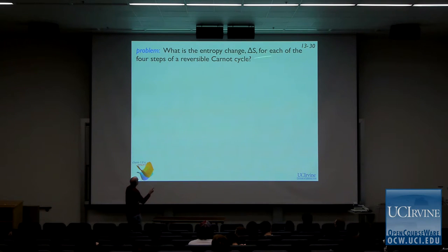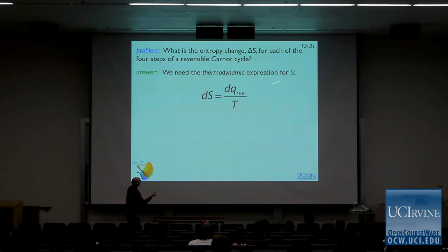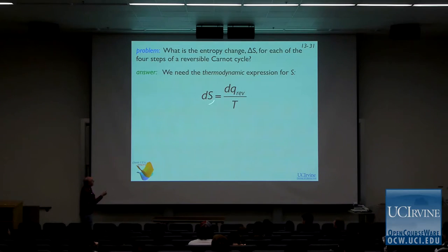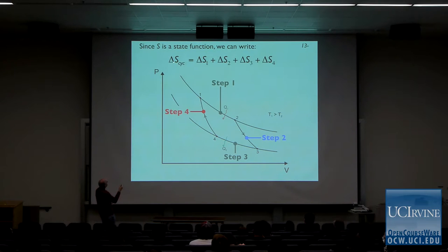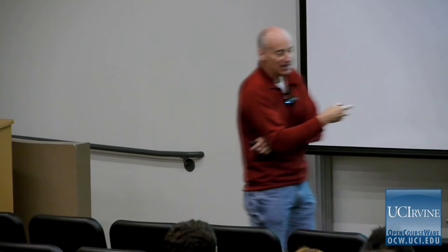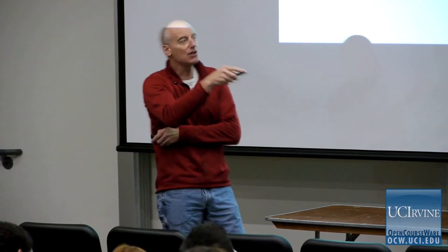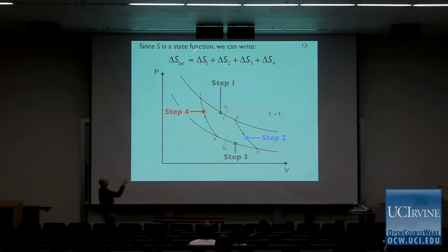What's the entropy change for each of the four steps of the reversible Carnot cycle? We need a thermodynamic expression for S. The change in entropy is the change in heat — provided the process is reversible — divided by the T at which the process is occurring: dS = dQ_rev / T. This reversibility issue turns out to be important; that's the reason this is an equal sign. If I want to know the delta S for the whole cycle, I can just add up the delta S for each step, because delta S is a state function.